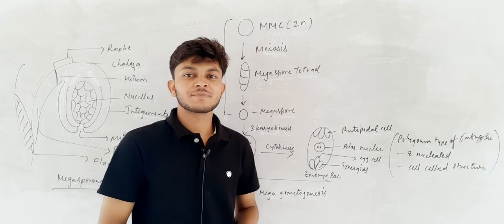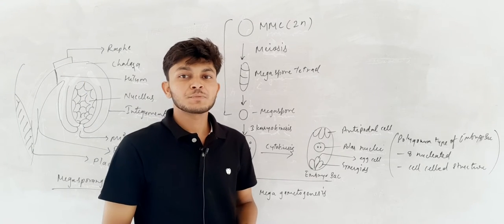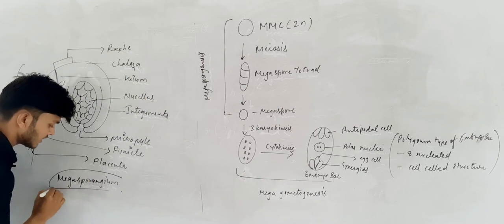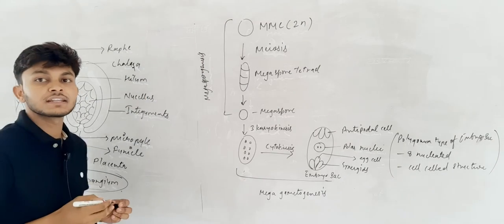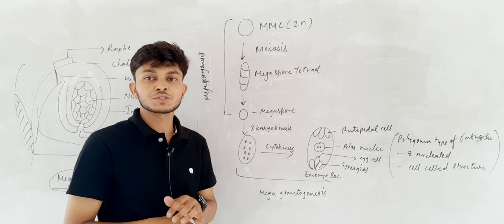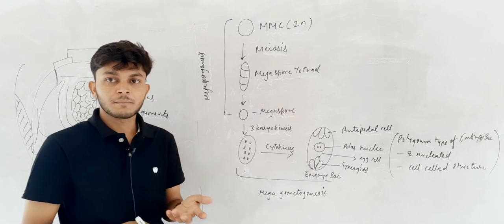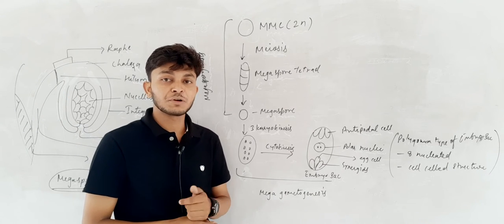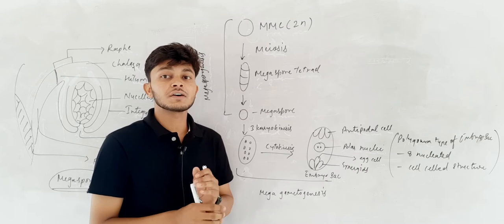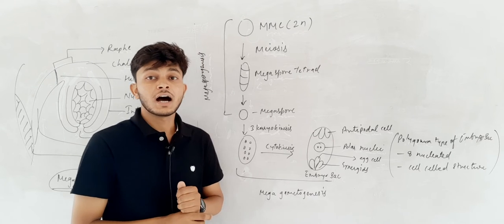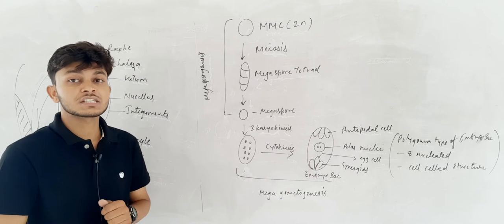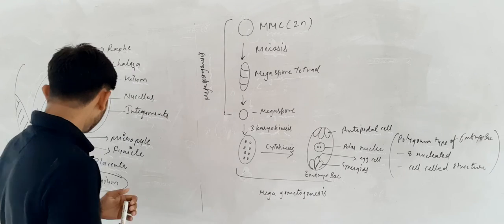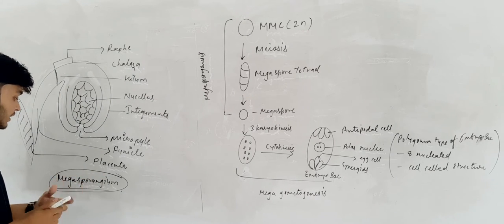Hello, good morning class. Today we will talk about megasporanthium. We have previously talked about microsporanthium and male gametophyte, and we have seen how the male gametes and pollen grains are formed. Today we will talk about the female reproductive parts, specifically megasporanthium.